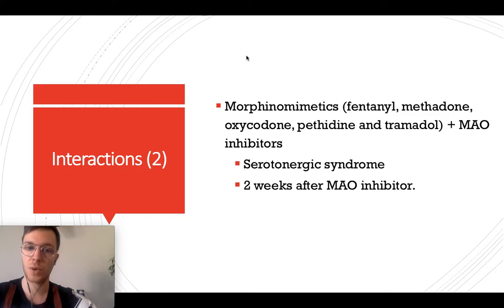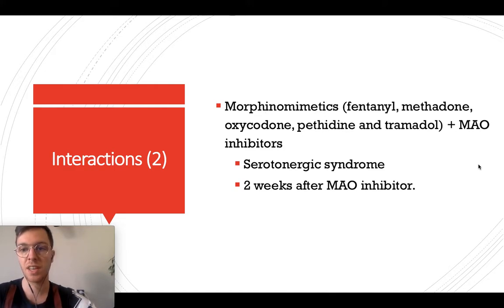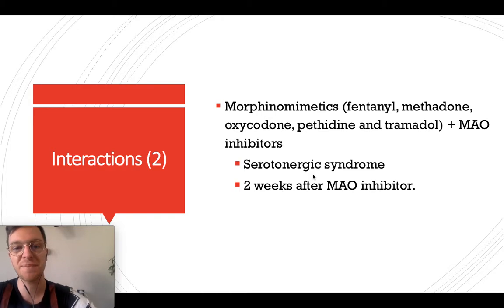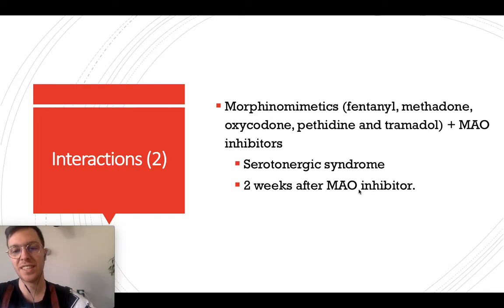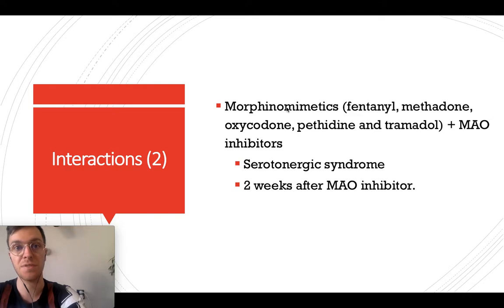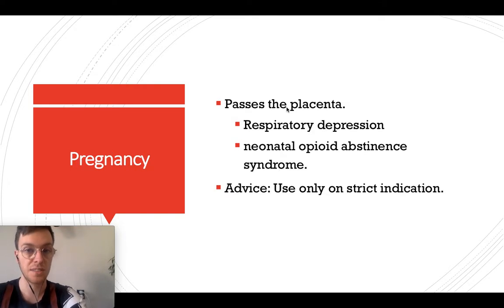When oxycodone or any other morphine-like medication is taken together with MAO inhibitors, this may lead to serotonergic syndrome. Therefore, if you use a MAO inhibitor, wait two weeks before it's safe to start using oxycodone or any other morphine-like medication.